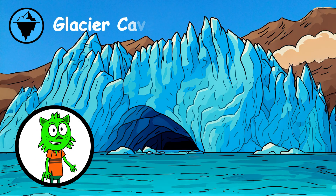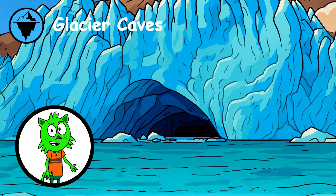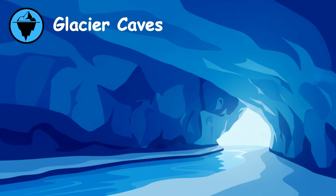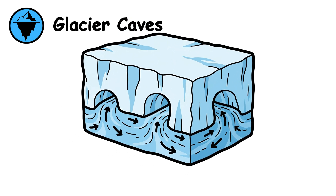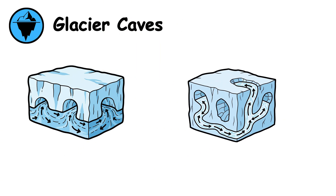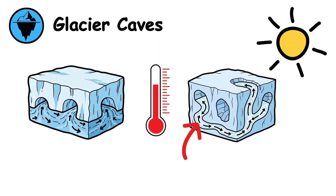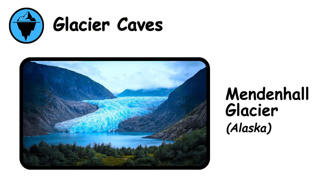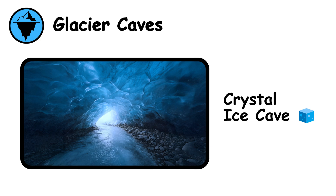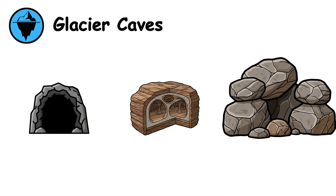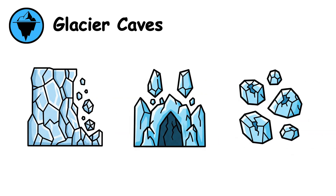Glacier Caves. Within glaciers, meltwater or geothermal heat creates passages through ice. Glacier caves often display stunning blue light filtered through dense ice. The most spectacular form in temperate glaciers where summer meltwater carves complex drainage networks. Alaska's Mendenhall Glacier contained the famous crystal ice cave with electric blue chambers before collapsing as the glacier retreated. Unlike rock caves that persist for millennia, glacier caves typically last only months or years.